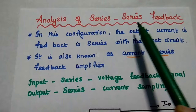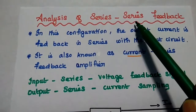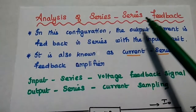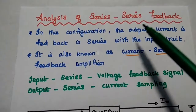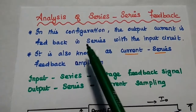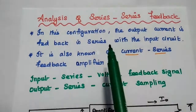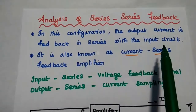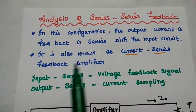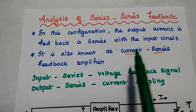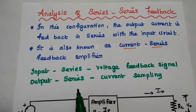The second term represents the way of sampling the output signal. Here, series type is used. Series sampling means current sampling method. Then the output is a current signal. In this configuration, the output current is fed back in series with the input circuit. Hence, it is known as current series feedback amplifier. So the output is a current, and the feedback signal is connected in series with the input circuit.